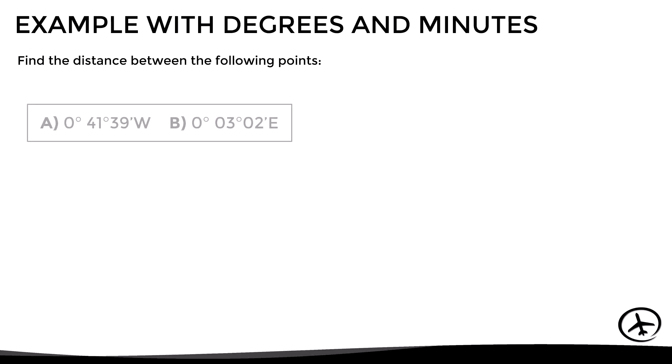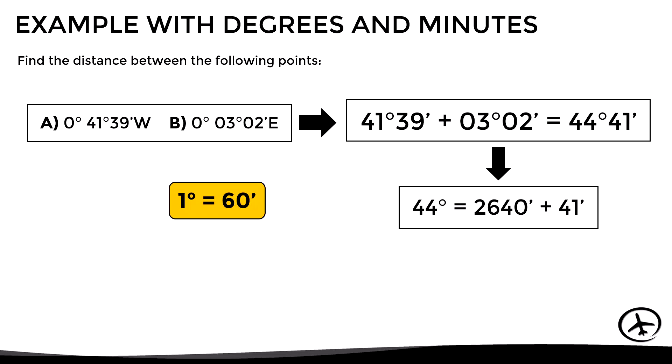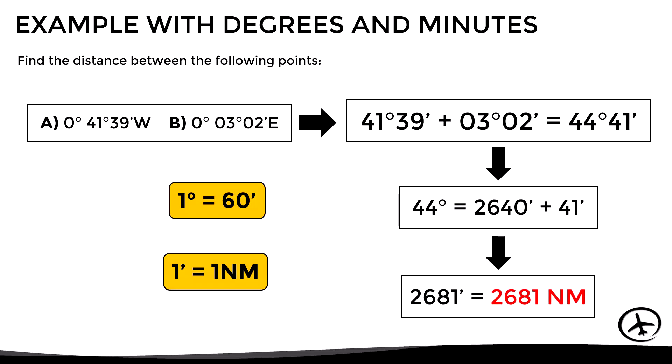Let's see another example, but now with degrees and minutes. In this case these points are both at the equator, and since they are in different hemispheres we have to add the longitudes to obtain the difference in longitude, which in this case is 44 degrees and 41 minutes. Since each degree equals 60 minutes, if we convert 44 degrees to minutes the result will be 2640 minutes, plus the remaining 41 minutes. Since each minute equals 1 nautical mile at the equator, the distance between both points is 2681 nautical miles.